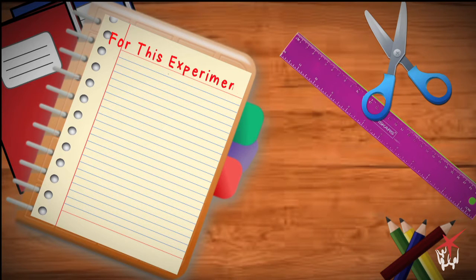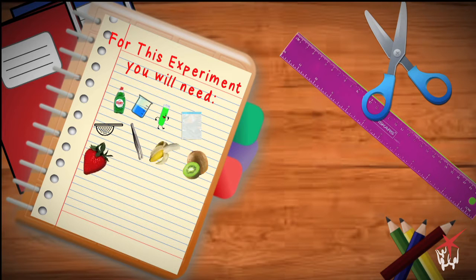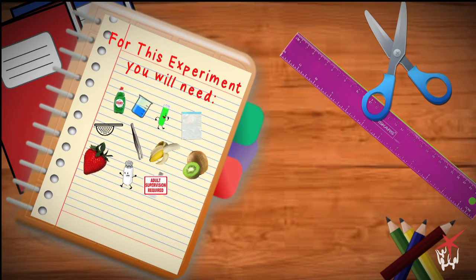Extracting DNA — for this experiment you will need: washing up liquid, a small beaker and a test tube, a Ziploc plastic bag, a sieve, a tweezers or something to take DNA out with, some fruit — strawberries, kiwi, banana works best — salt, and rubbing alcohol. You can buy this in the chemist, but you will need adult supervision.